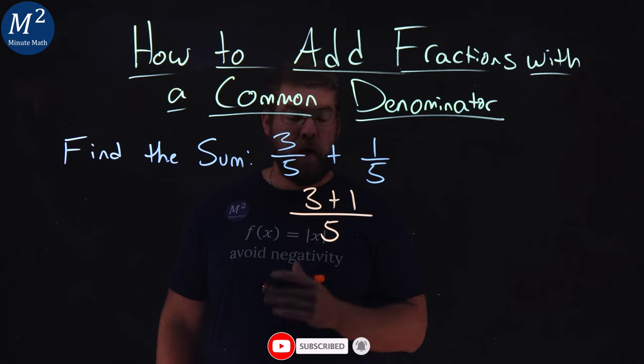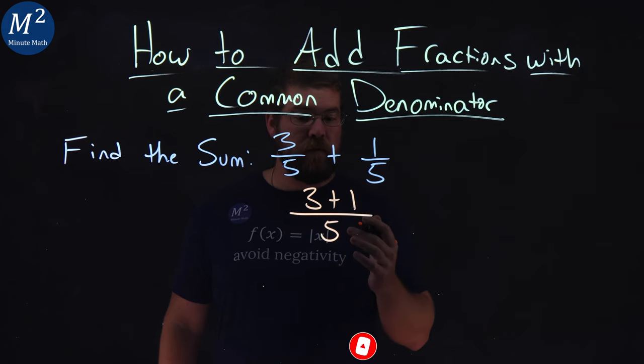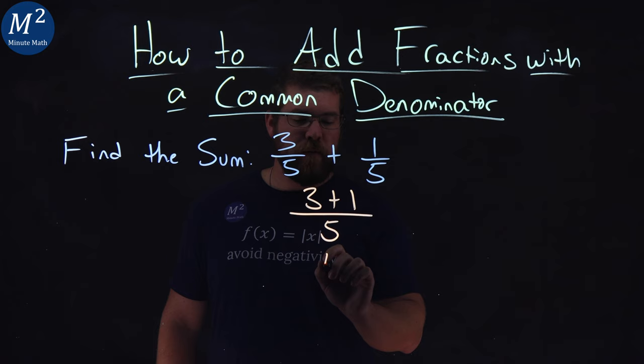Three plus one. From there, we just need to simplify. Three plus one is four, and five is still in the denominator.